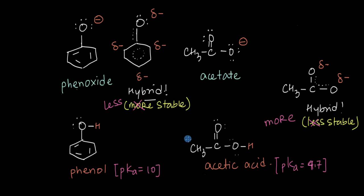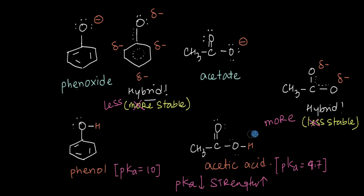The strength of an acid is a measure of how easily these acids can give out hydrogen in the form of H⁺, and chemists measure this acidic strength in terms of the pKa value. A lower pKa means a stronger acid. Because acetic acid has a lower pKa, it is much easier to break acetic acid into acetate and H⁺ compared to phenol. Phenol is a much weaker acid, so it's much more difficult to break phenol into phenoxide and H⁺.